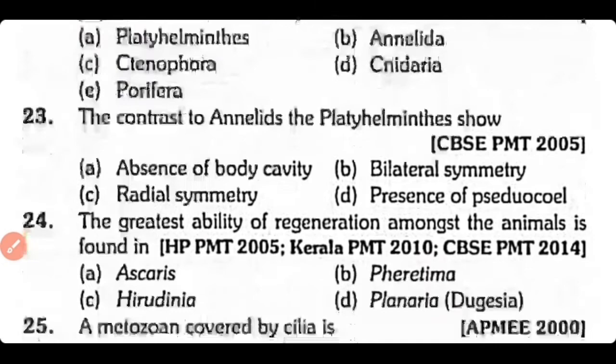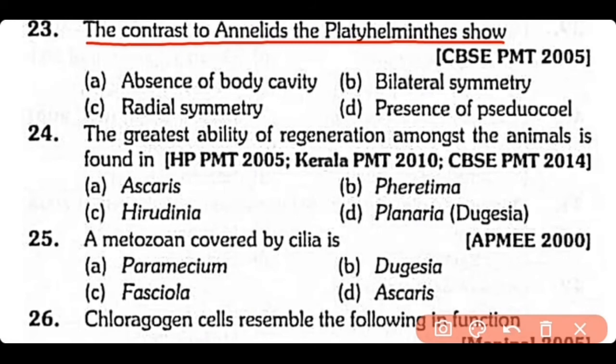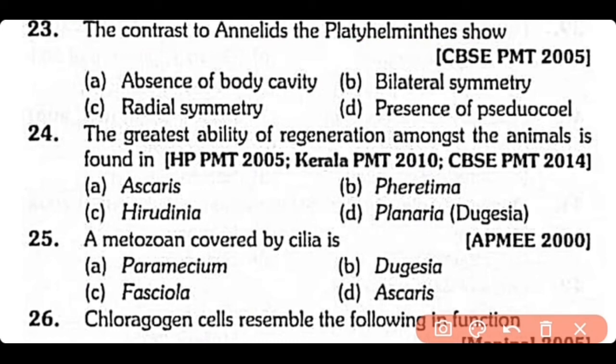Question no.23. In contrast to annelids, Platyhelminthes show: absence of body cavity, bilateral symmetry, radial symmetry, or presence of pseudocoelom? The correct answer is option A. The body cavity or coelom is absent in Platyhelminthes while it is present in annelids.